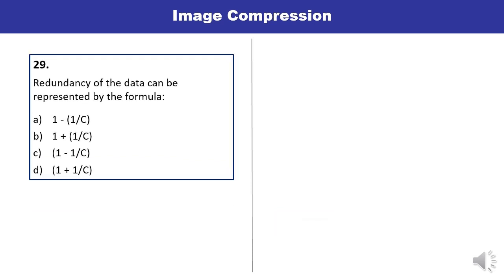Question 29: Redundancy of data can be represented by the formula 1 minus 1 upon C. We have discussed one question based on this. So A is the correct answer.